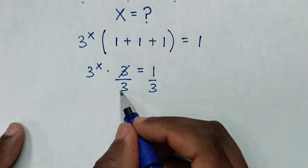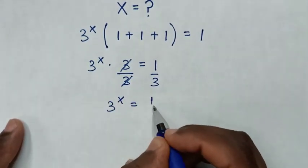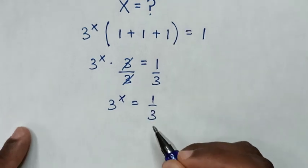So this 3 and this 3 will cancel, then it will be 3^x is equal to 1/3. Then in next step,